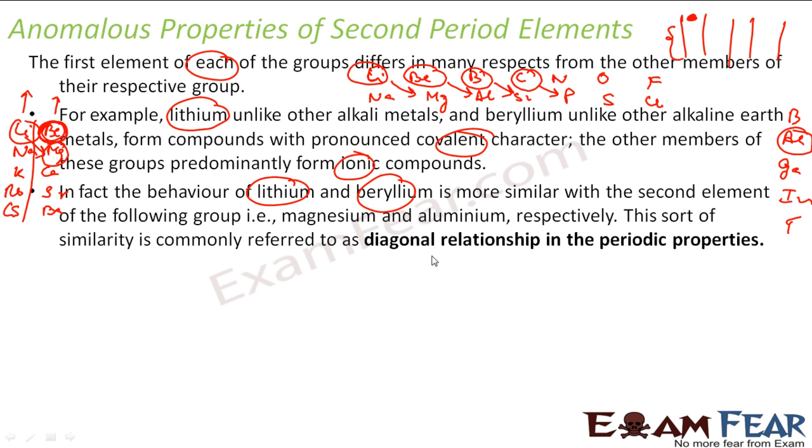And this sort of similarity is called diagonal relationship. And this happens only for the second period and third period. This issue is only in second and third period.